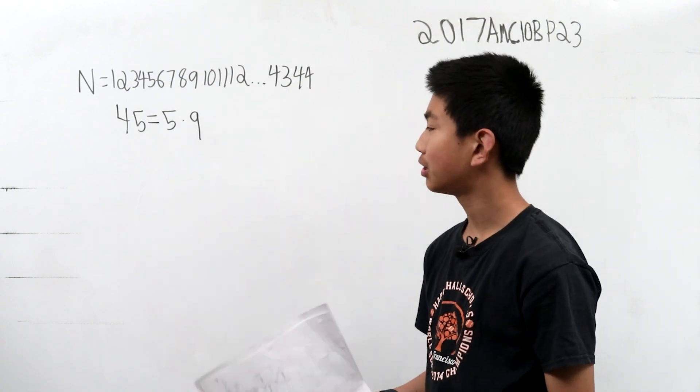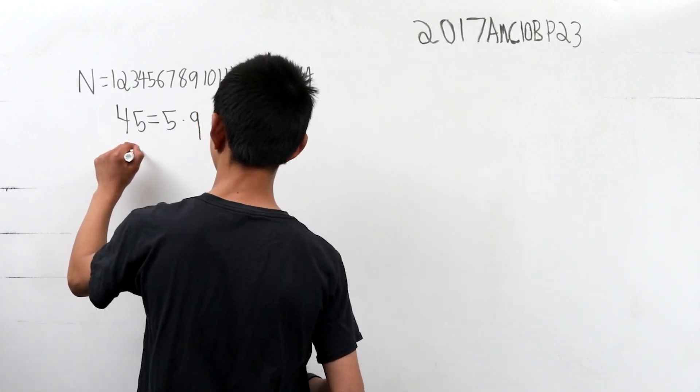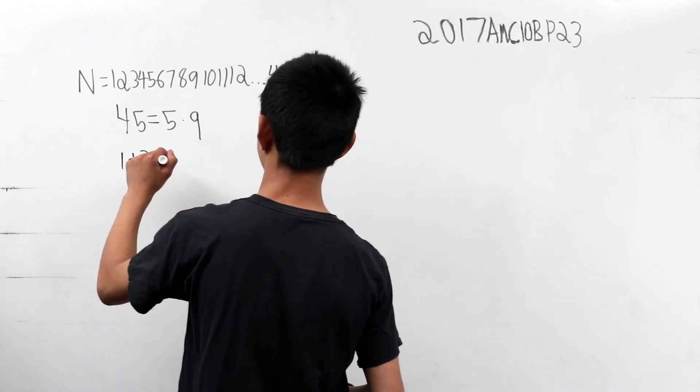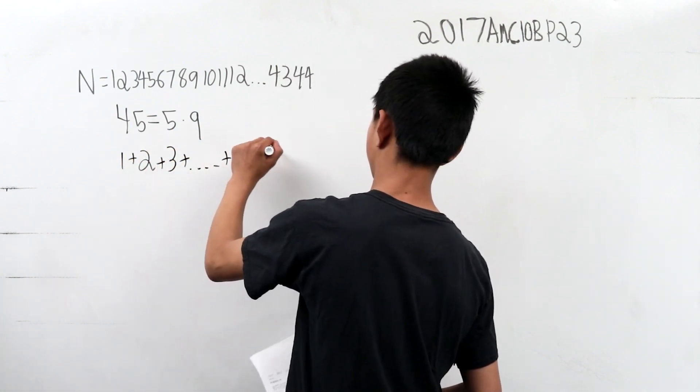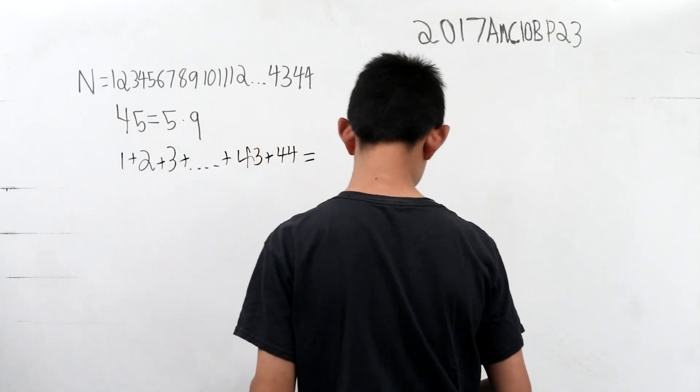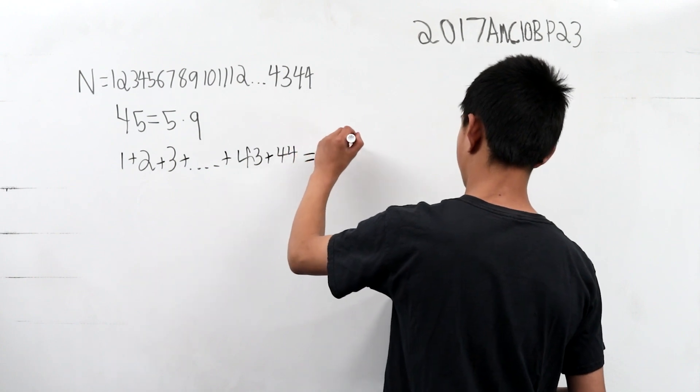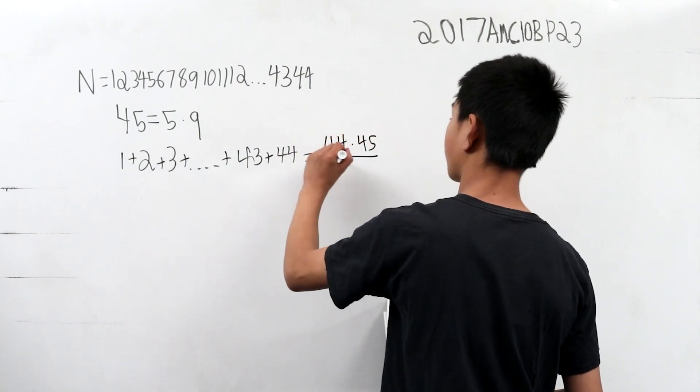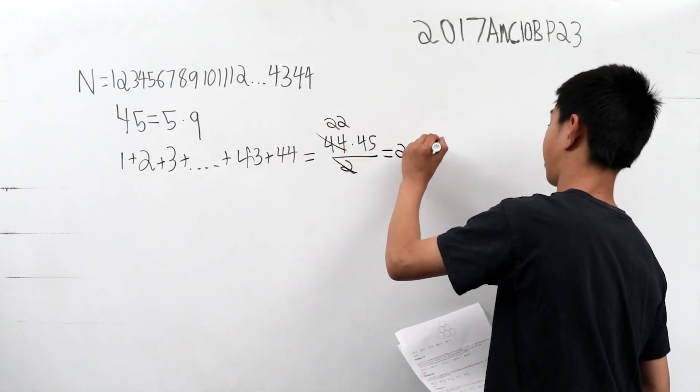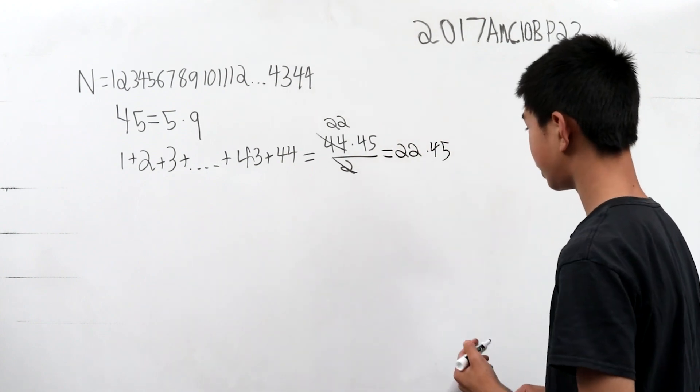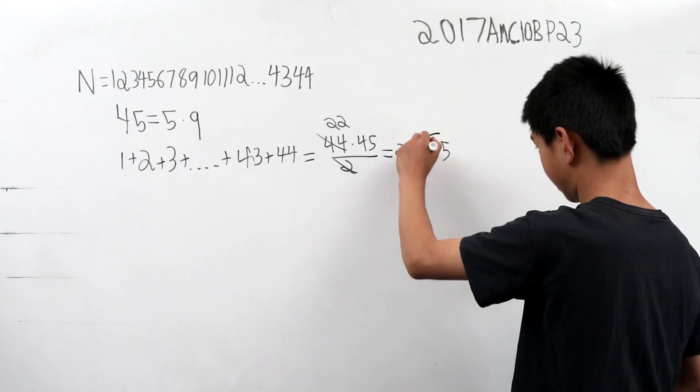It's 1 less than a multiple of 5. So what we can do now is we can add all the numbers from 1 to 44. This is equal to 44 times 45 over 2, this cancels for 22, and this is 22 times 45, where we see that when you add up all these numbers, it is divisible by 5.